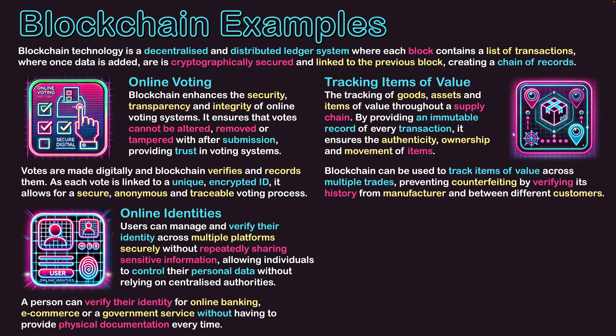The third area is tracking items of value — the tracking of goods, assets and items of value throughout a supply chain. By providing an immutable record of every transaction, it ensures the authenticity, ownership and movement of items. This applies to tracking physical items and knowing their ID and whereabouts, but also to things like cryptocurrencies and how they are exchanged and connected to specific users, their blockchain and previous transactions — so digital items as well.